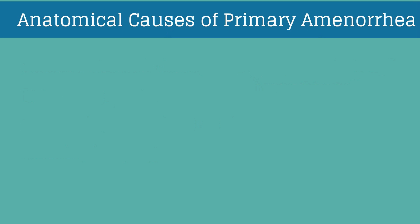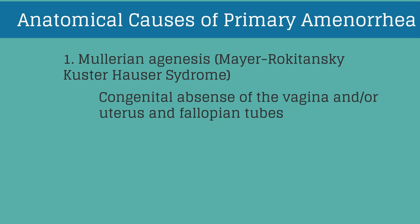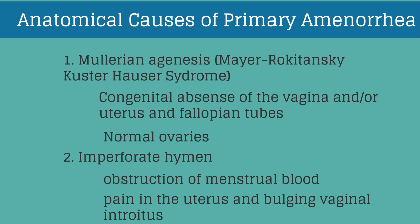Lastly, there are anatomic causes that can result in primary amenorrhea in girls with normal breast development. Müllerian agenesis, or Mayer-Rokitansky-Küster-Hauser syndrome, is the congenital absence of the vagina and often the uterus and fallopian tubes, though ovaries are normal since they are not derived from Müllerian structures. If a patient has an imperforate hymen, there is obstruction of menstrual blood, and patients will present with uterine pain and a bulging vaginal introitus.